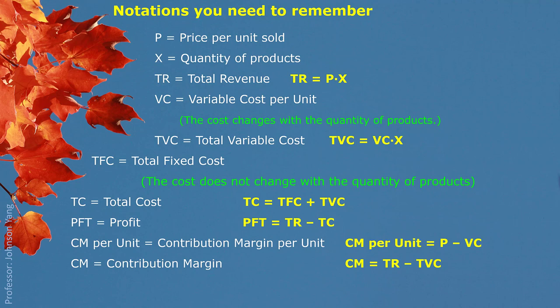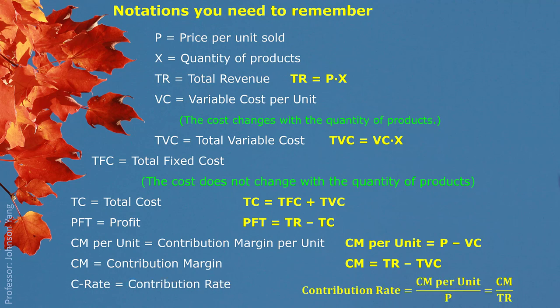If we put them all together, that gives us total contribution margin, which comes from total revenue minus total variable cost. This tells us how much we can use to cover the fixed cost. We also have a different perspective called contribution rate, which is contribution margin divided by total revenue, or contribution margin per unit divided by price. They are the same — called contribution rate.